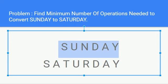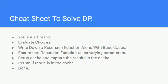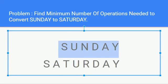In the previous video I explained about the cheat sheet. As a creator you should evaluate the choices and write down the recursive function. Let's do these three things and then get back to the rest of the steps.